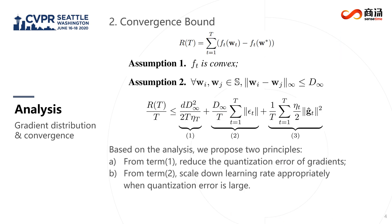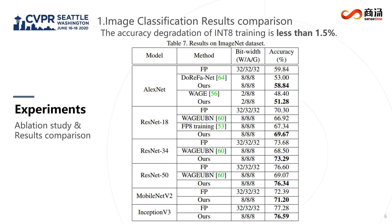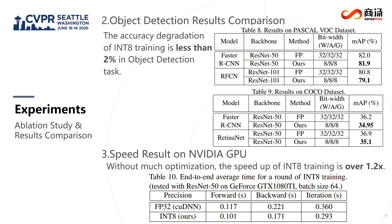Based on this analysis, we propose two main methods. The first is direction-sensitive gradient clipping, and the second is deviation-contractive learning rate scaling. The experiments show our end-to-end training could perform less than 2% accuracy degradation, and achieve more than 1.2 times acceleration.